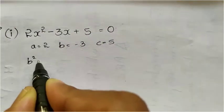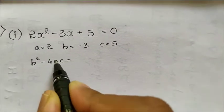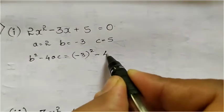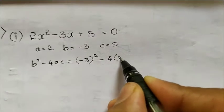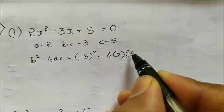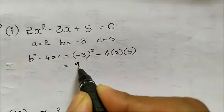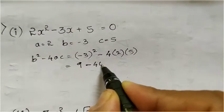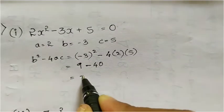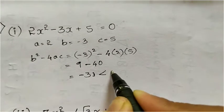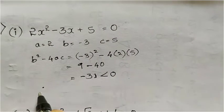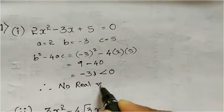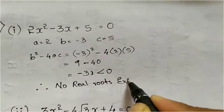Our discriminant is b square minus 4ac. b square means minus 3 whole square, minus 4 times a times c, that is 2 and 5. So 3 squared is 9, minus 4 times 2 times 5 is 40. Here 9 minus 40 gives minus 31, which is smaller than 0. Therefore, no real roots exist.